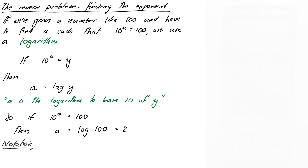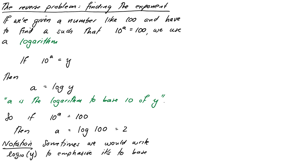A little note on notation: sometimes, to be clear that we're working in base 10, we write log with a small subscript 10 of y. The log to base e is often written as ln of y. Just writing 'log' can be a little ambiguous because some people interpret it to mean base e, so if you want to be doubly sure, you can add that little 10 subscript to make clear you're taking logarithms to base 10.